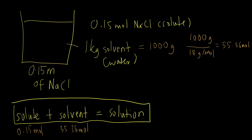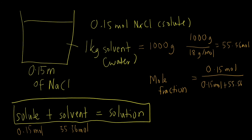Now that we have the number of moles of all components, we can calculate the mole fractions. To find the mole fraction of solute sodium chloride, we divide the moles of sodium chloride by the total moles of all components — solute plus solvent. This gives 2.693 × 10⁻³. Mole fraction is unitless because the moles in the denominator cancel with the moles in the numerator.